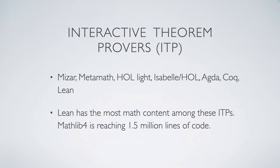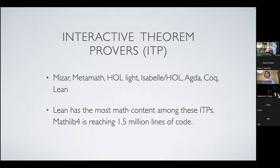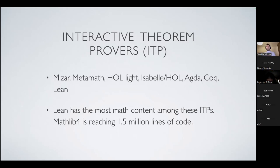For people familiar with Lean, these slides may be a little boring, but for those who have not heard of interactive theorem provers, here is a list of them more or less in chronological order: Mizar, Metamath, HOL (Higher Order Logic), HOL Light, Isabelle, Agda, Coq, and more recently Lean. Basically these are computer software where you write mathematics in a certain language, and the software tells you whether what you have constructed and proved is correct — it checks your proofs.